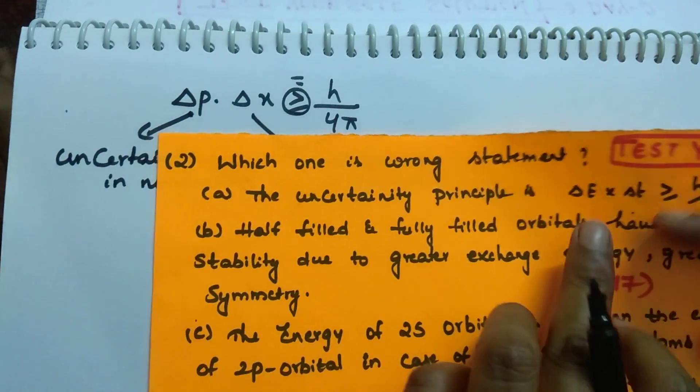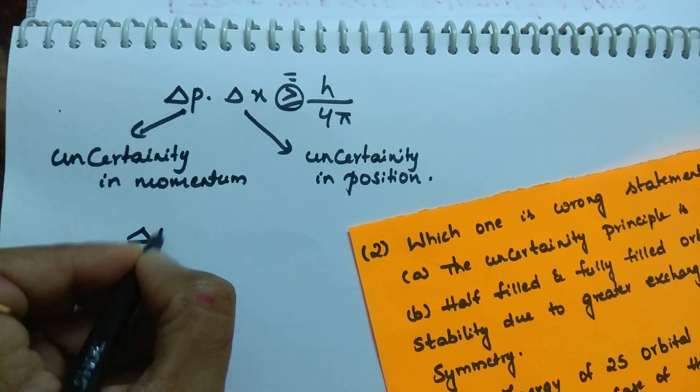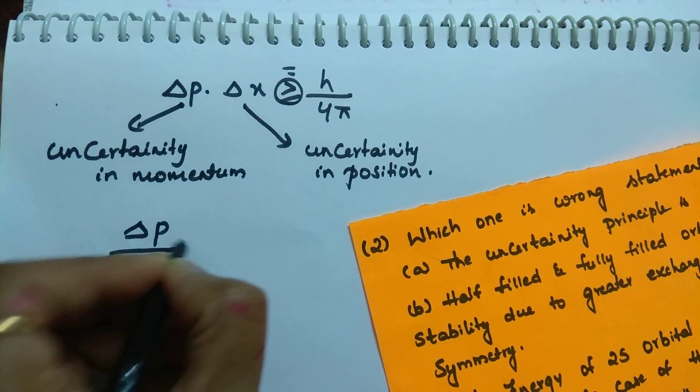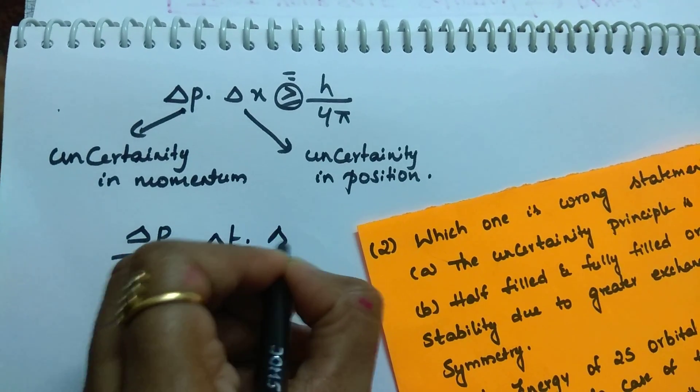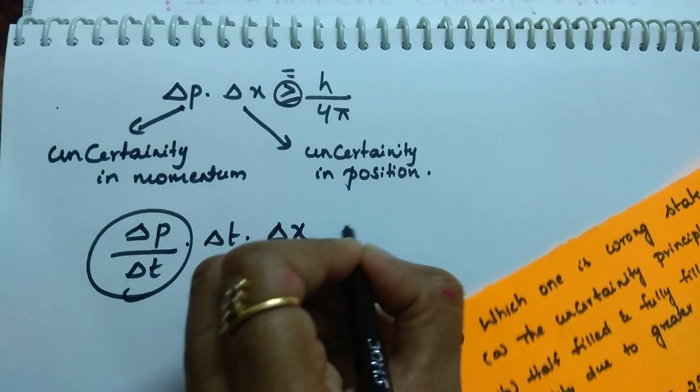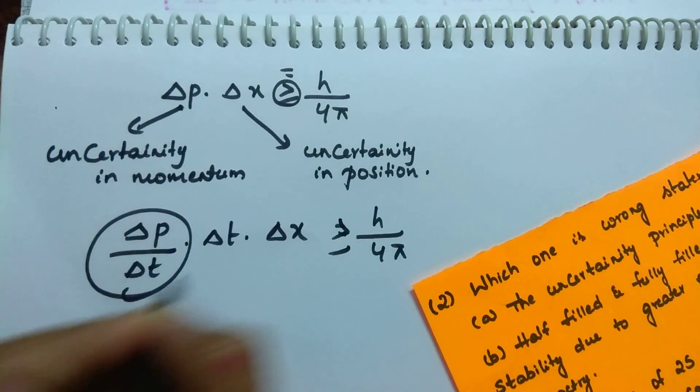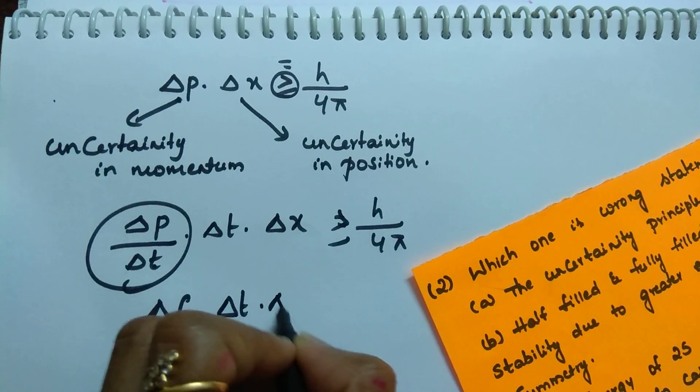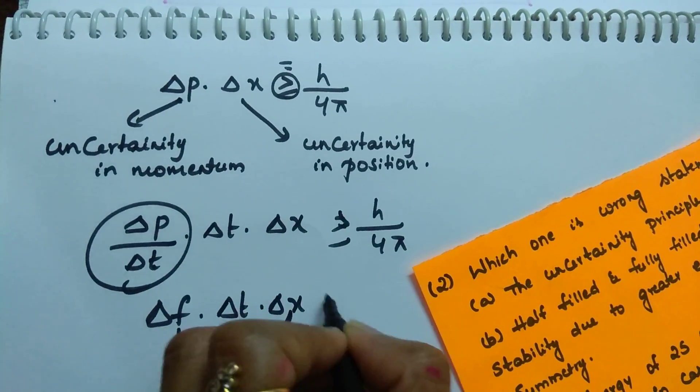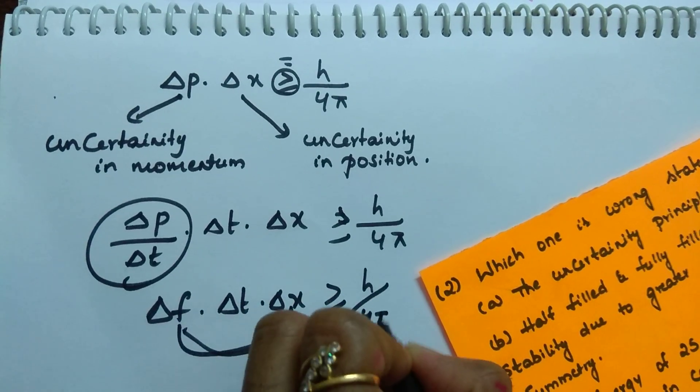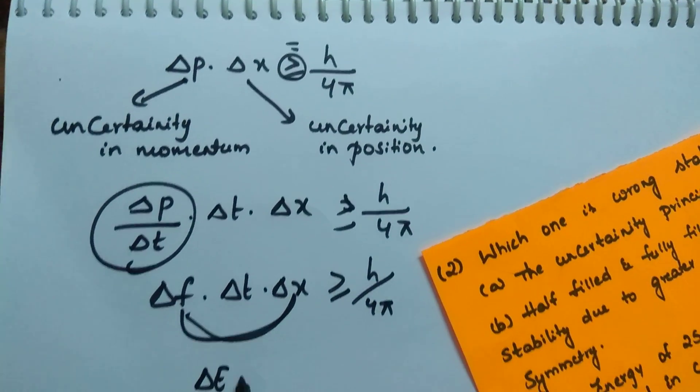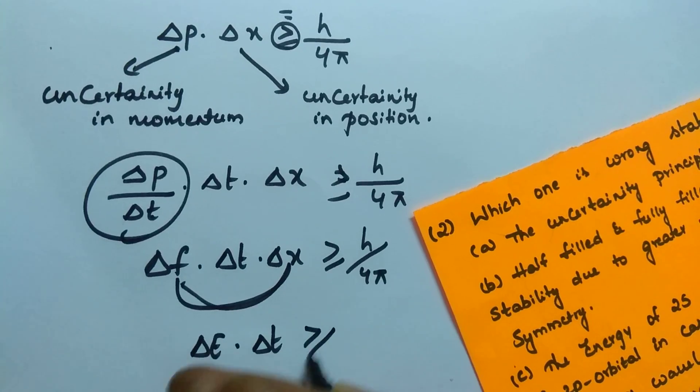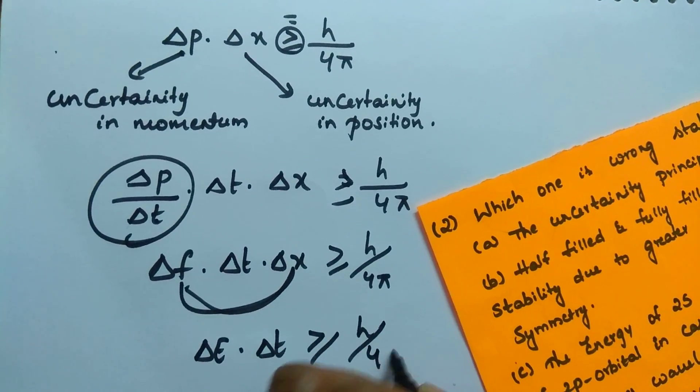What I do is, to get this expression, I am dividing and multiplying with delta T. Delta T, so that, delta P by delta T is equal to what? Delta F, force. Delta F and what we got? Delta X is there. Delta F into delta X is called delta E.